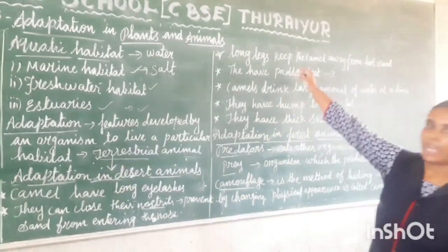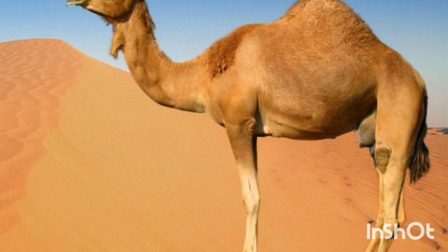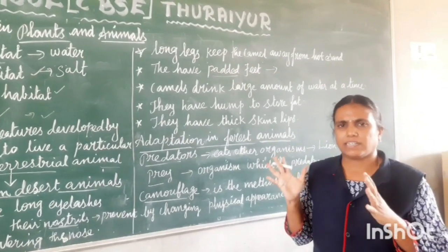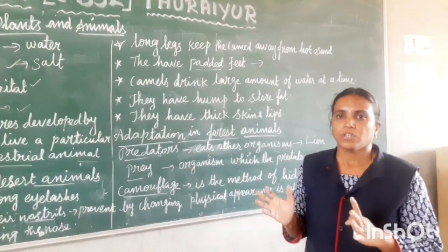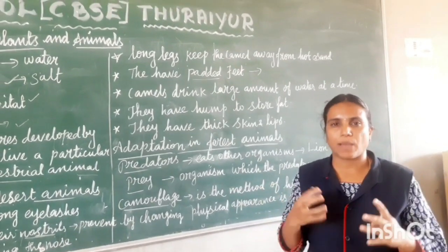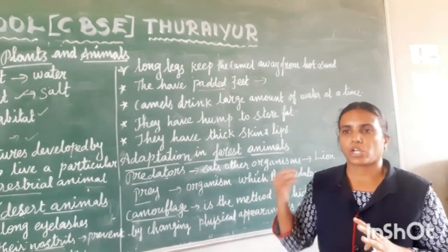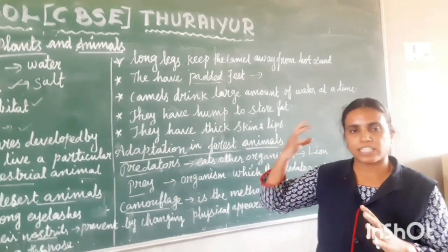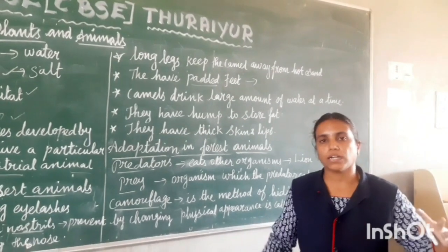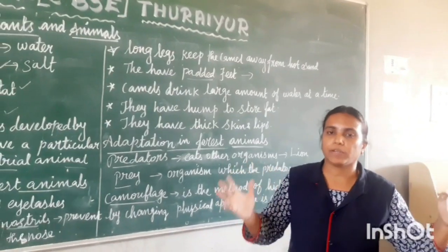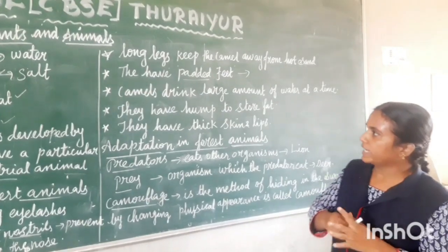The next adaptation is long legs. Camels have long legs which keep the camel away from the hot sand. In the desert, the climate is very hot during the day. While walking on the sand, the camel would feel extreme heat. In order to escape from the extreme heat, they have long legs.